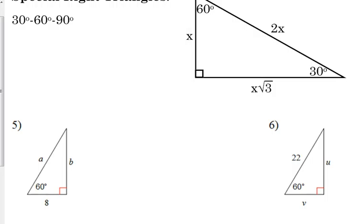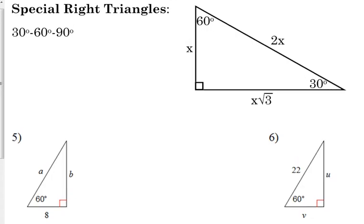On these triangles, they typically label the 60-degree angle, so if it's a right triangle, the other angle is 30 degrees — go ahead and label that. They give us the side opposite 30, which is x. So we multiply it by 2 for the hypotenuse: the hypotenuse A is 16. For the leg across from 60, we stick the square root of 3 on the end, so B is 8 square root of 3.